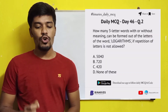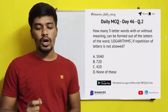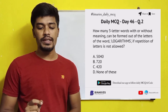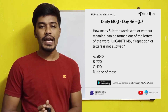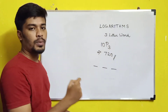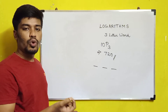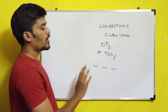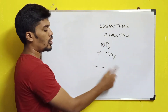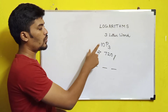The second question is: how many three-letter words, with or without meaning, can be formed out of the letters of the word LOGARITHMS if repetition of letters is not allowed? No repetition means once a letter like L is used, it cannot be used again.